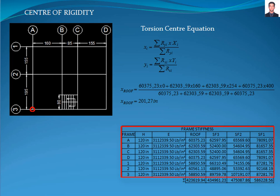For frame B, we multiply the stiffness of the frame B by 160 inches. For frame C, we multiply the stiffness of the frame C by 245 inches. And for the frame D, we multiply the stiffness of the frame D by 400 inches.